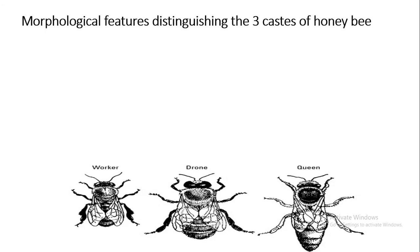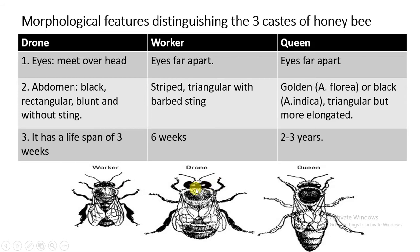Now we will discuss the morphological features distinguishing the three castes of honeybee. For the drone: the eyes meet over the head, the abdomen is black, rectangular and blunt — not pointed — and drones have no sting. The lifespan of the drone is three weeks. For the worker: the eyes are far apart, the abdomen is striped and somewhat triangular with a barbed sting, and the lifespan is six weeks. For the queen: the eyes are far apart, the abdomen is golden in color in Apis florea or black in Apis indica, more elongated and triangular, and the queen can survive for up to two to three years.